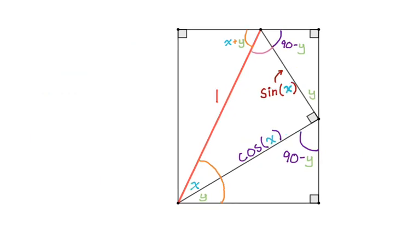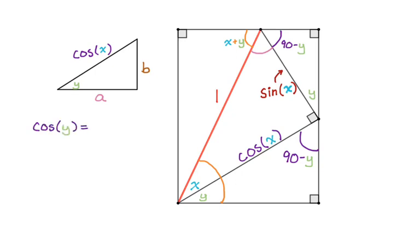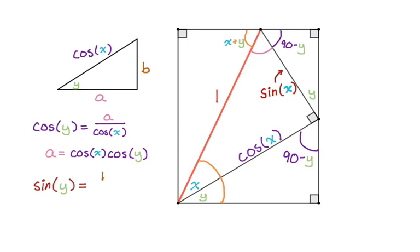First I'm going to deal with the bottom triangle. It has a hypotenuse of cosine of x and an angle of y. The cosine of angle y is adjacent, which is A, over hypotenuse, which is cosine of x. So A is cosine x cosine y — usually you organize these alphabetically by variable. Then sine of y is opposite, which is B, over hypotenuse cosine of x. So B is cosine x sine y.